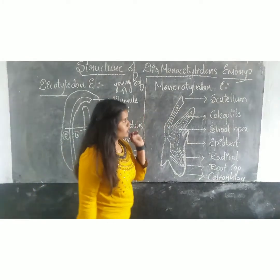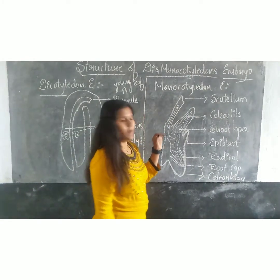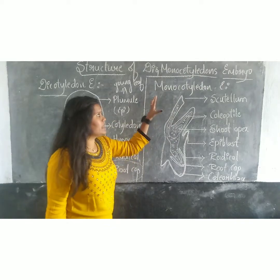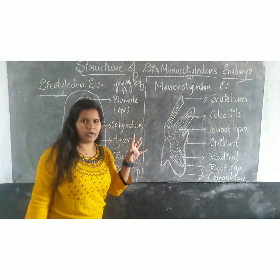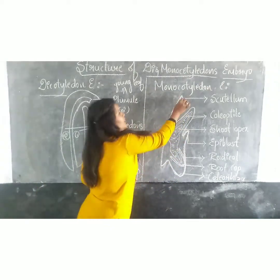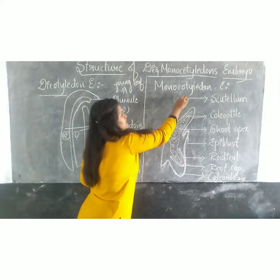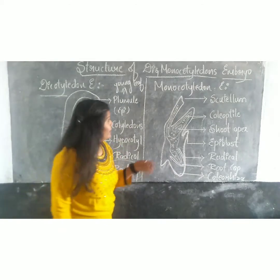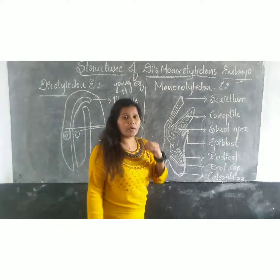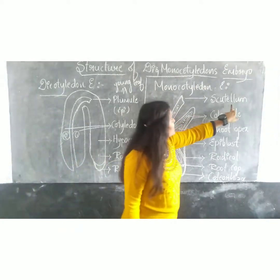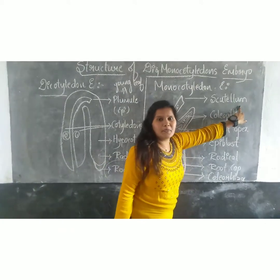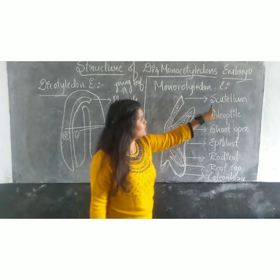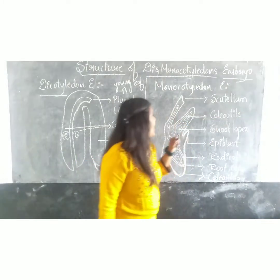Coming to the monocotteridon embryo — the word itself suggests that in monocotteridon, only a single cotteridon is present. That cotteridon, or single cotteridon, is called as the scotterlemy. So that cotteridon name is known as scotterlemy.